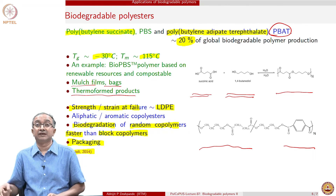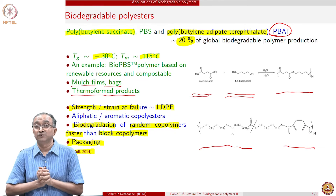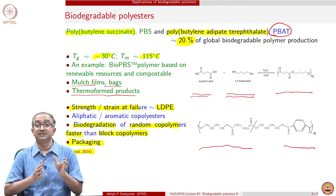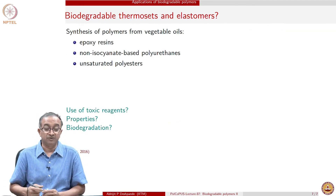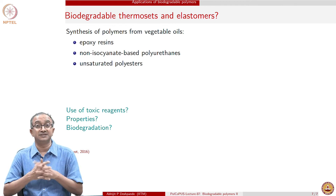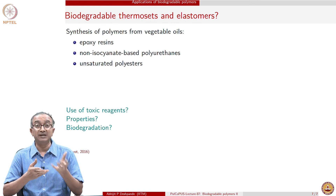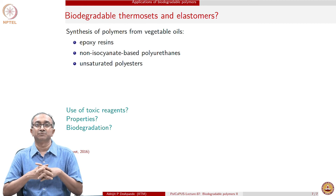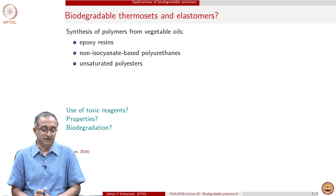We can see that there are several examples of biodegradable polymers. One thing to notice is that the processing techniques and molecular architectures discussed all belong to thermoplastics. We will close this lecture by pondering what about biodegradable thermosets and elastomers, since these cross-linked systems also form a significant portion of polymeric material usage — thermosets providing stability and elastomers providing flexibility and damping properties.